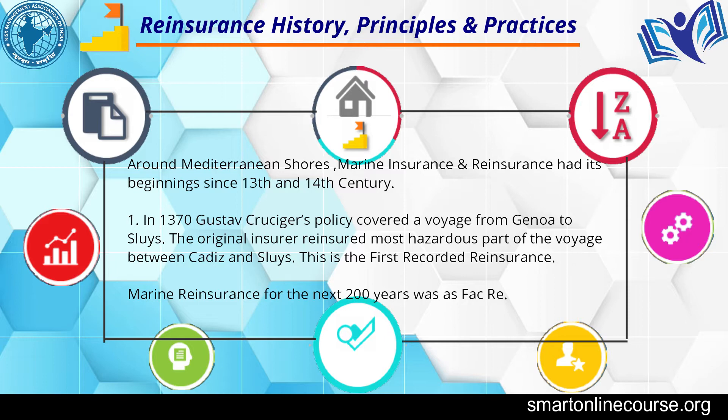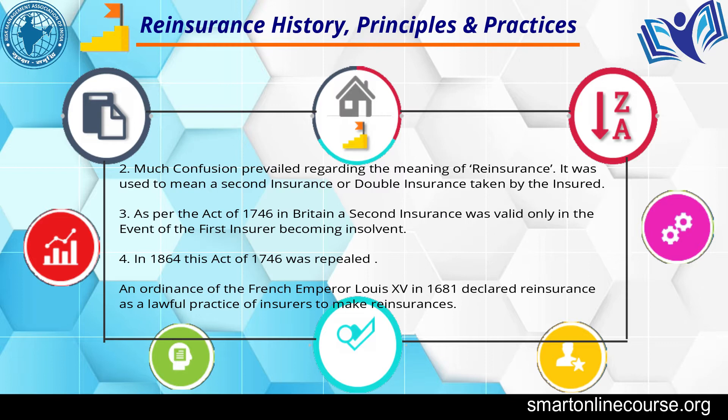Thereafter, for about 200 years, marine facultative reinsurance was the method very common in Europe. Much confusion also prevailed regarding the meaning of reinsurance — it was used to mean a second insurance or double insurance taken by the insured.